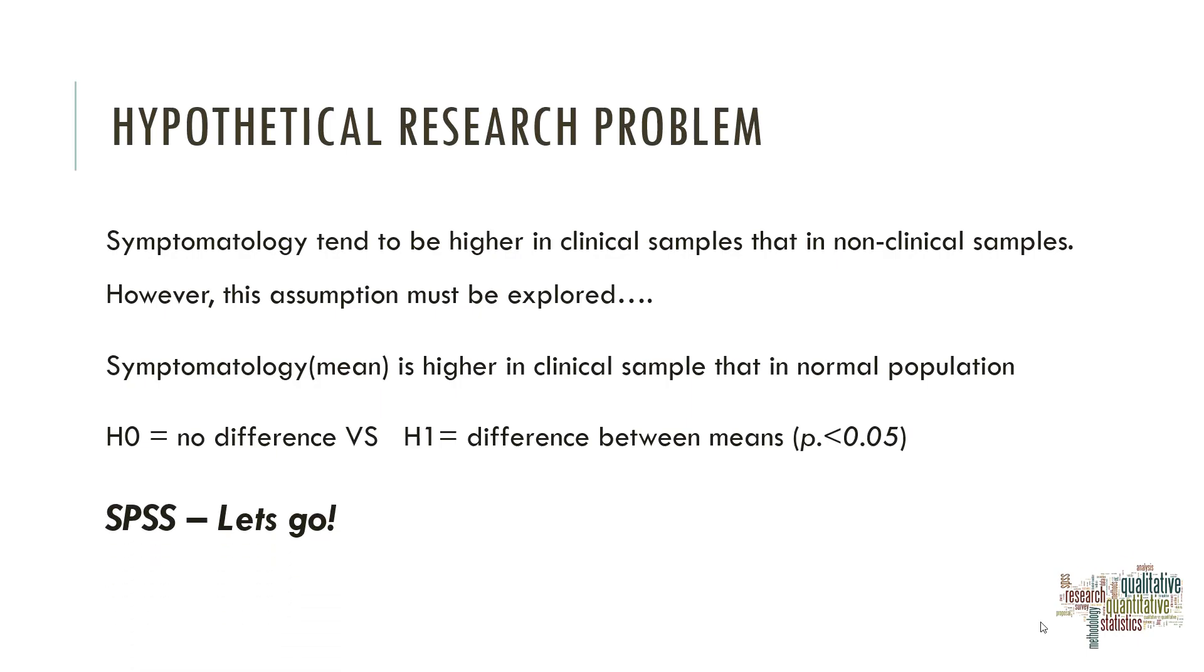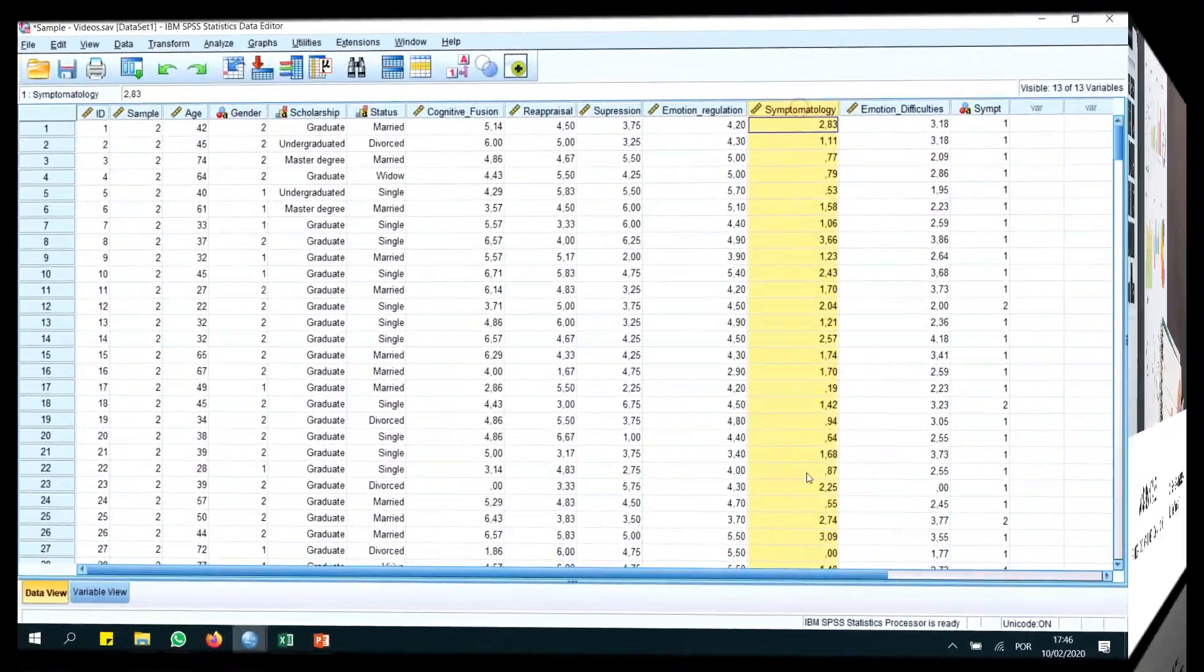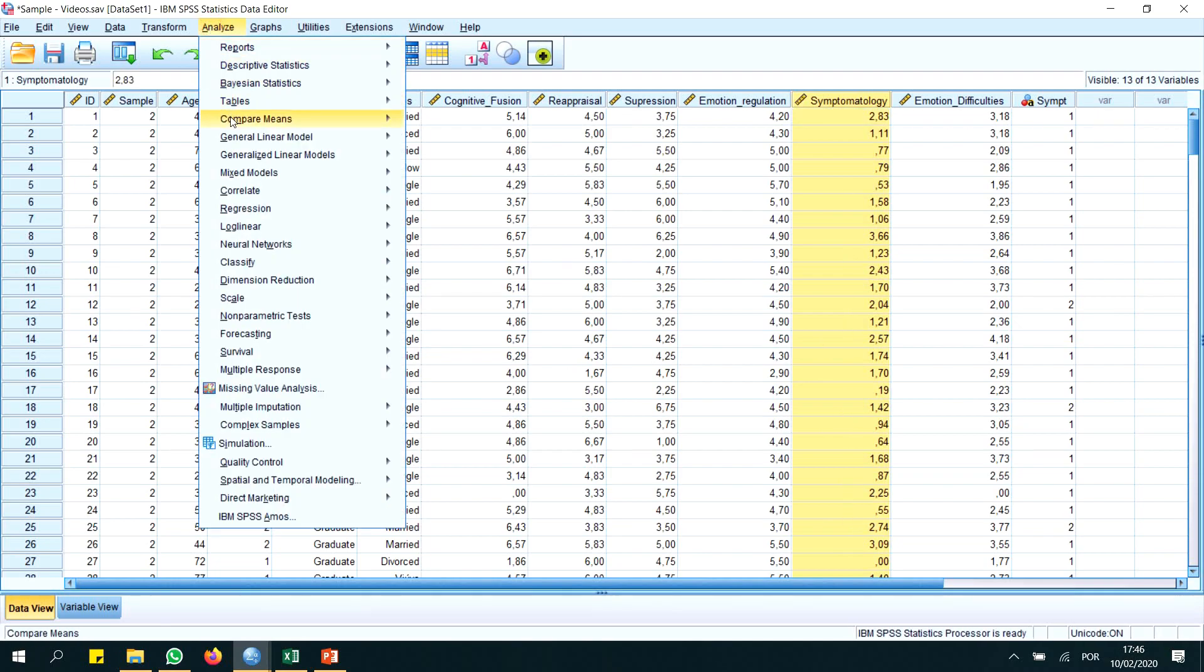Now we are here in the SPSS and we have here our variable symptomatology and we will test if symptomatology is different from normal population, an hypothesized value of normal population or not. How can we perform this test? We go to here to analyze, compare means, and it's here: one sample t-test. Click on them.